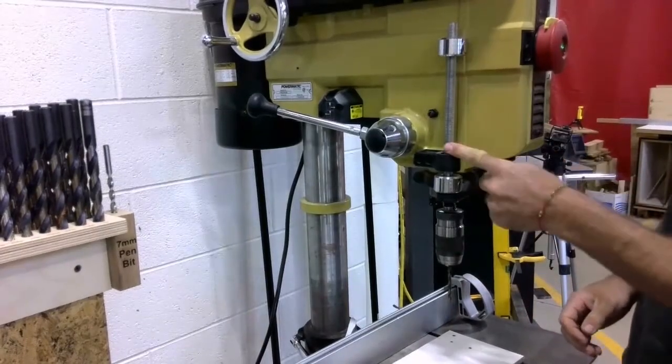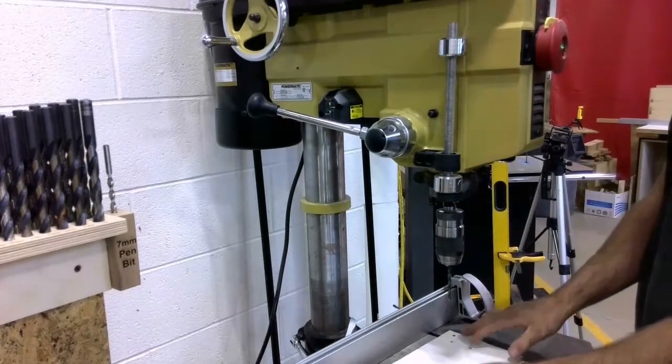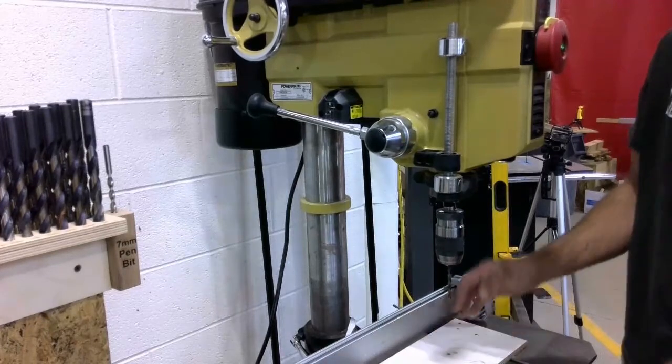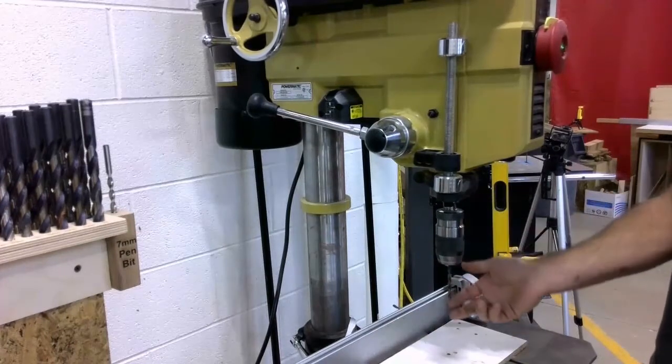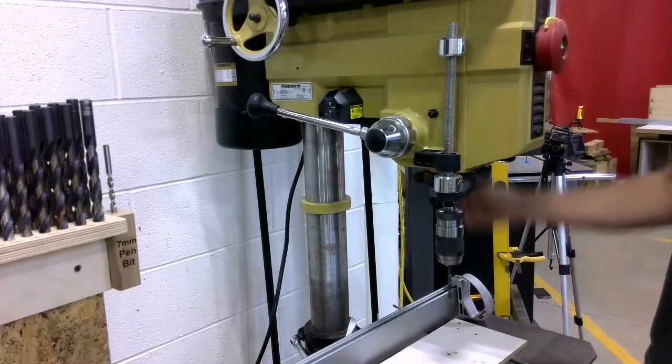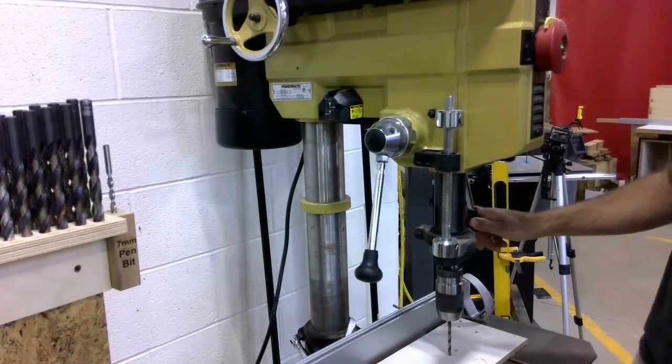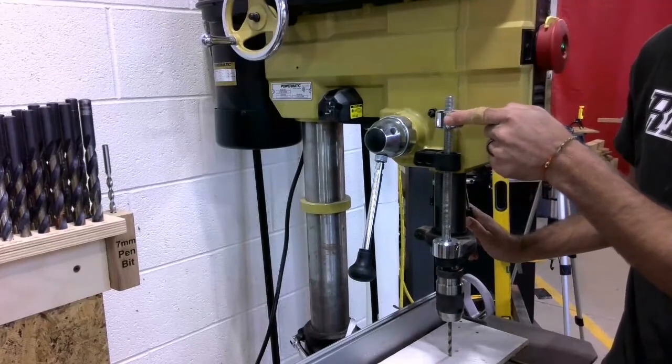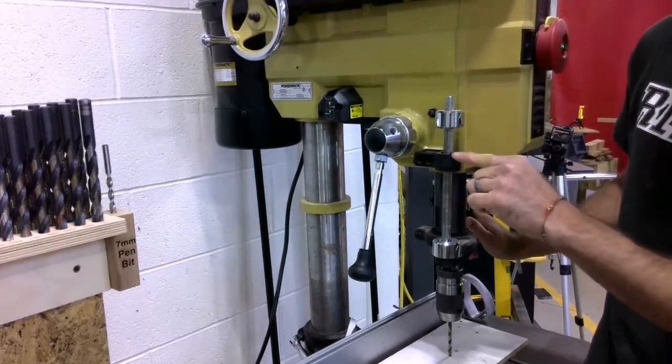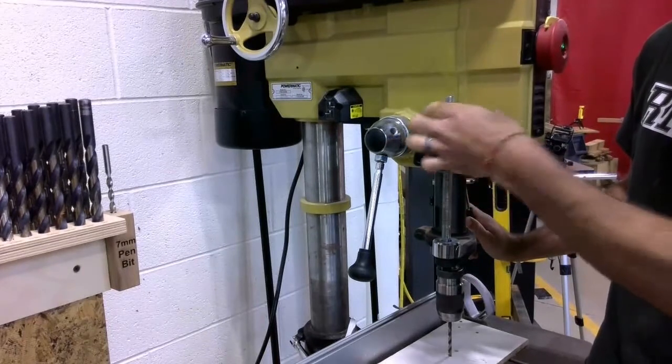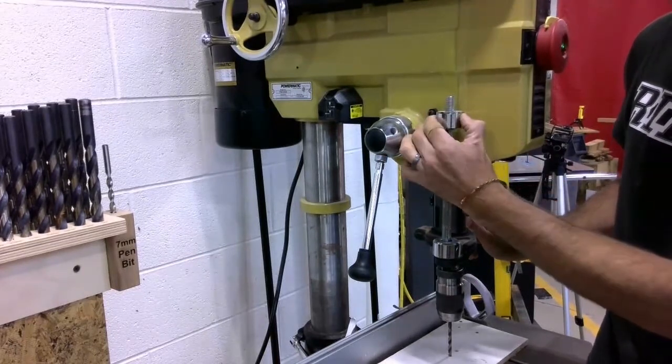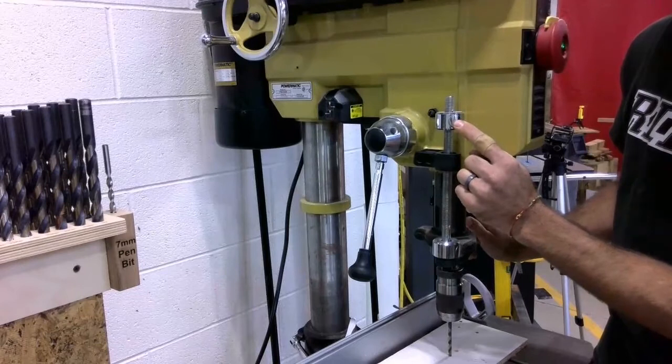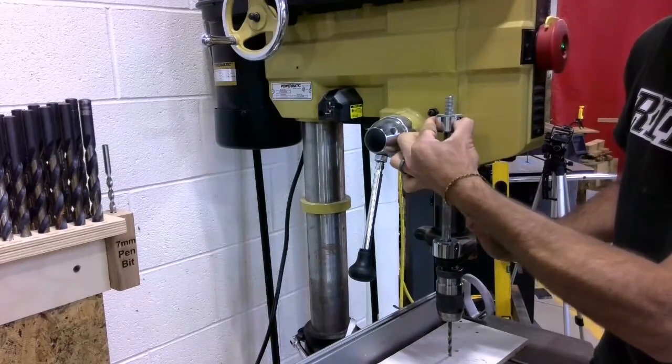The next adjustment we need to make is to the depth stop. So with my backer material on my table, I'm going to lower the spindle down until my drill bit hits my backer material, and I'm going to hold it tight right there. Now I need to lower the upper stop down to the black bracket. So I can either spin this and it will slowly lower down, or I can push the quick release button right here, and now I can just slide it down.